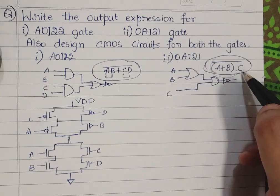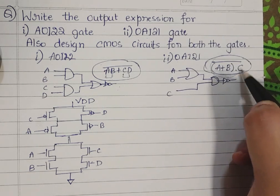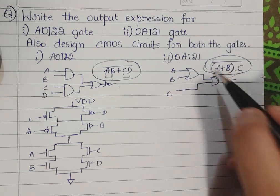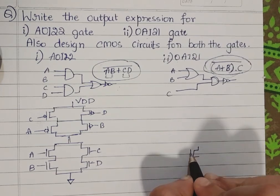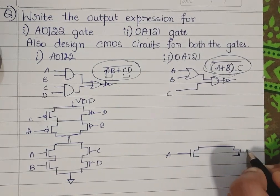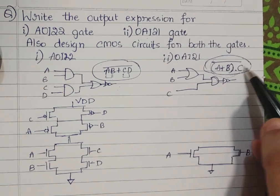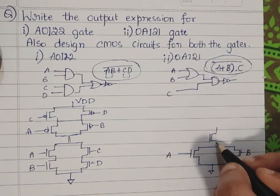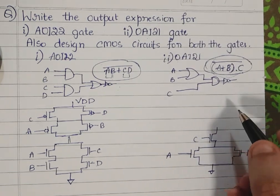Now let's see how to write the CMOS structure for the OAI gate. For the NMOS structure, A and B are in parallel connection, and C is in series with that parallel combination. So the NMOS structure is A parallel with B, and C in series with it.